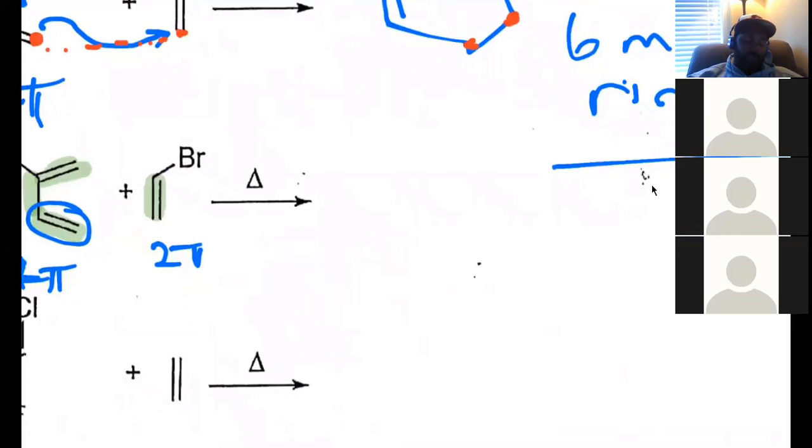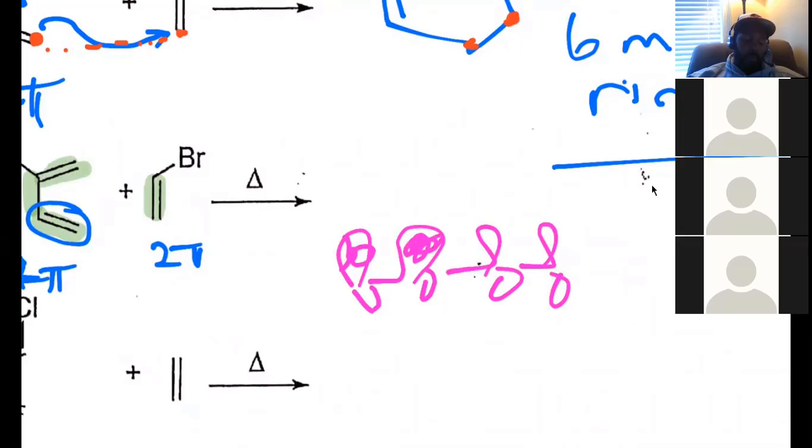Right? So for a four-pi system, if you remember from the diagram, a HOMO looks like this. So the HOMO of a four-pi system looks like this, right? Where the wave passed through one time. You following?